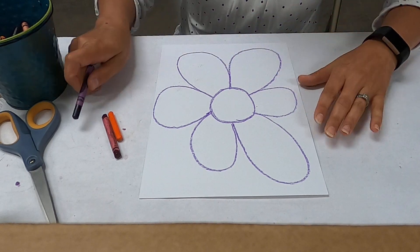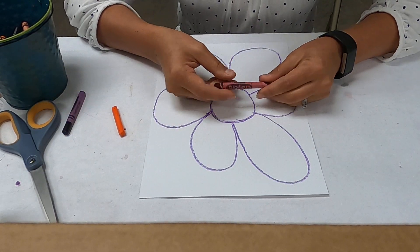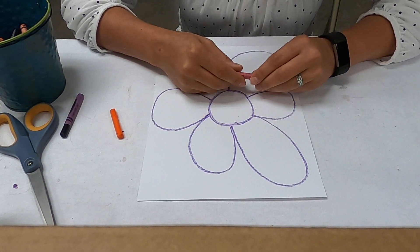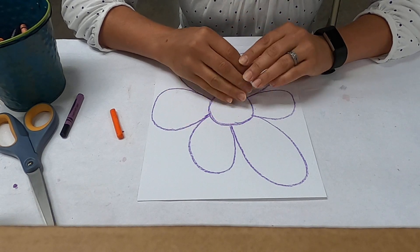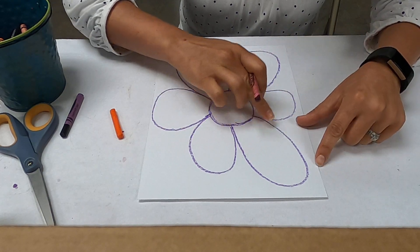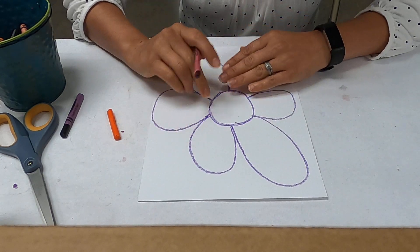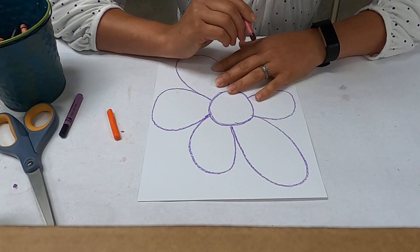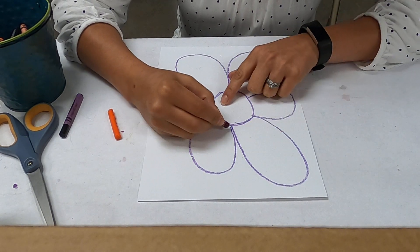So then taking another color crayon, we're going to practice our different types of lines. In each one of these petals I want you to draw a different kind of line and I'll show you what I mean. So for this petal I'm going to do straight lines, so lines that go just completely straight just like that.